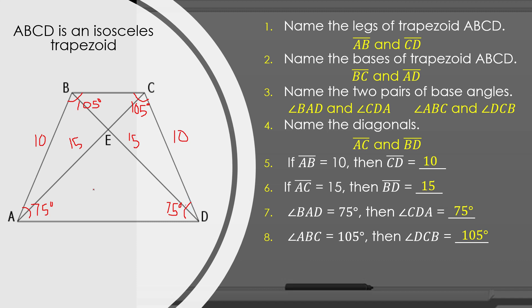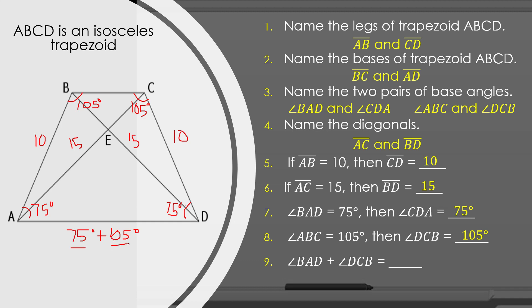Number nine, what is the sum of the measure of angle BAD and angle BCD? Since angle BAD is equal to 75 degrees and angle BCD is equal to 105 degrees, if you get the sum of 75 plus 105, that will be equal to 180 degrees.